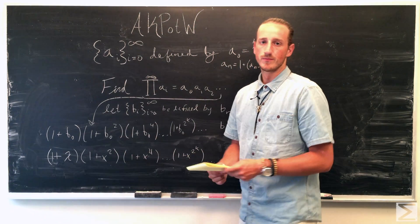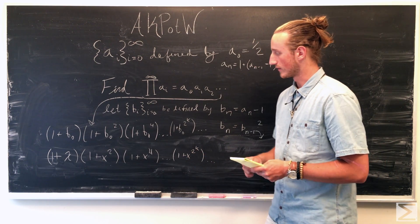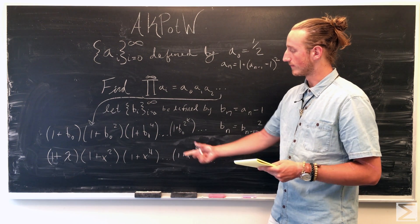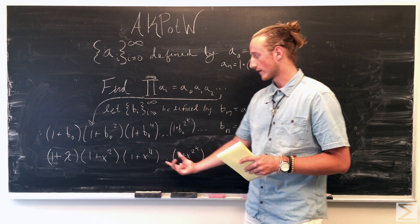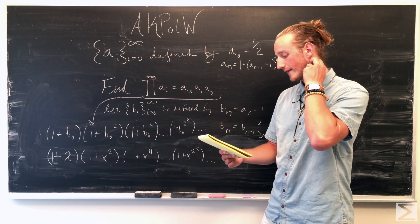So just plug in x in for b of n, it gives us a kind of a formula or a sequence we're familiar with. This product, this infinite product, can be simplified using the polynomial identity.